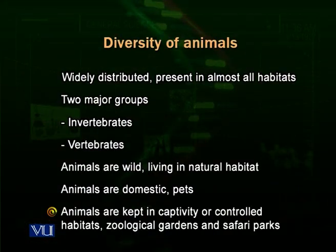Animals are also kept for beauty and for the beauty of nature. For example, some people keep peacocks in their houses. Some people keep beautiful animals like pheasants in their homes, which are very beautiful birds. Animals could also be kept in captivity or a controlled habitat — for example, we grow animals in zoological gardens and in safari parks.